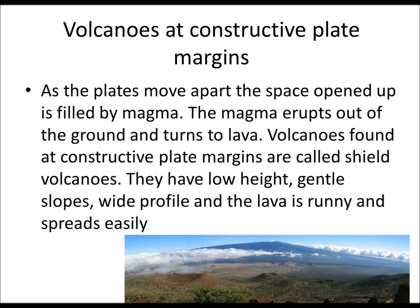So volcanoes that are formed at constructive plate margins. These are formed as the plates move apart, the space is opened up and filled by magma. The magma erupts out of the ground and turns into lava as it cools. The volcanoes found here at constructive plate margins are called shield volcanoes, because they sort of look like an old shield lying on the floor.